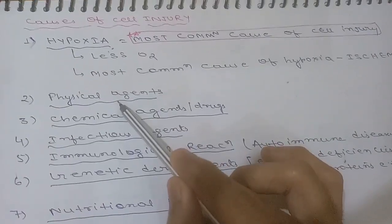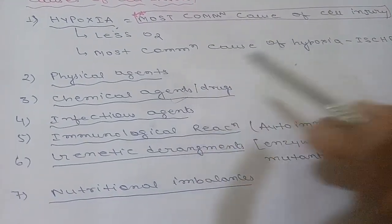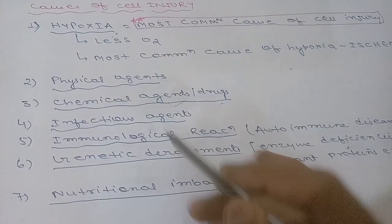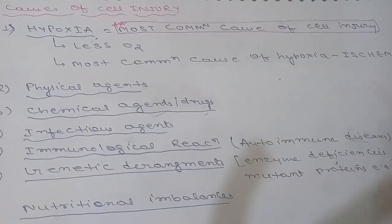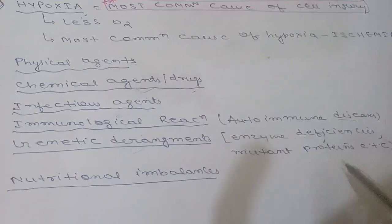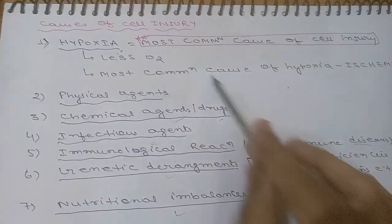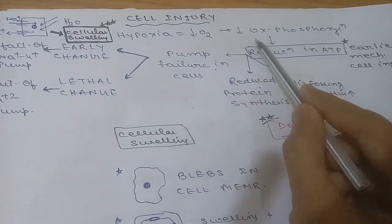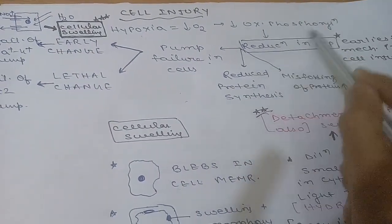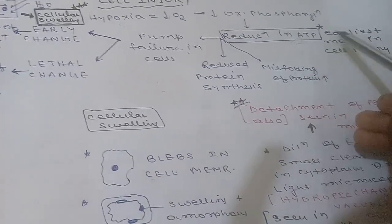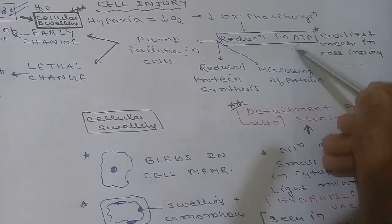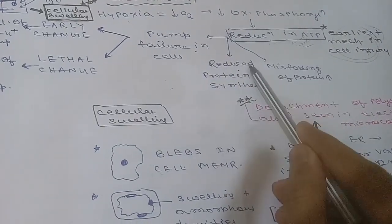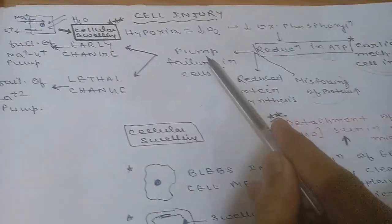Other causes of cell injury include physical agents, chemical agents and drugs, infectious and immunological reactions such as autoimmune diseases, genetic derangements such as enzyme deficiency or mutant proteins, and nutritional imbalances. Hypoxia decreases O2, leading to decreased oxidative phosphorylation, which leads to decreased ATP formation. Reduction in ATP is the earliest mechanism in cell injury.